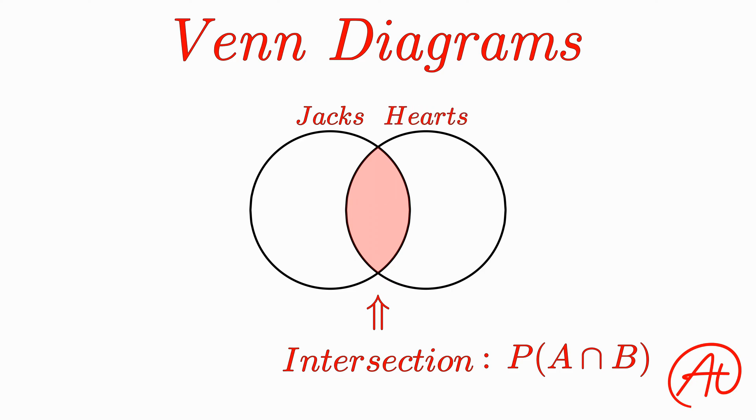In that case, in this left circle, we would have cards like the Jack of Diamonds, the Jack of Spades, and the Jack of Clubs. In the right circle, we would have cards like the 2 of Hearts, 3 of Hearts, 4 of Hearts, and so forth. However, there would only be one card that both circles share, and that would be the Jack of Hearts. So we place that in the intersection of both circles.